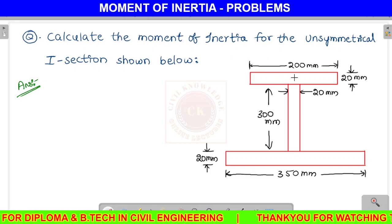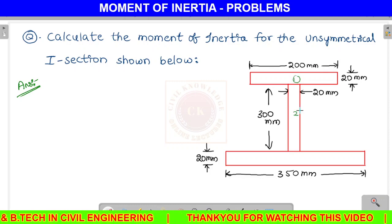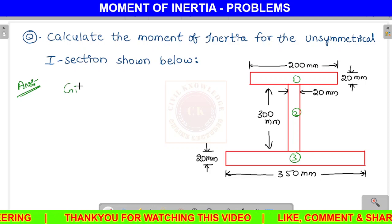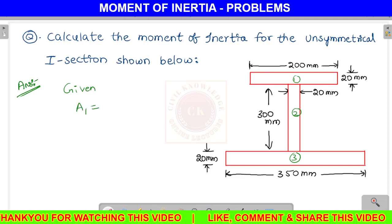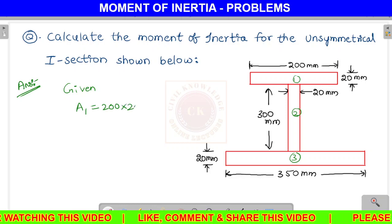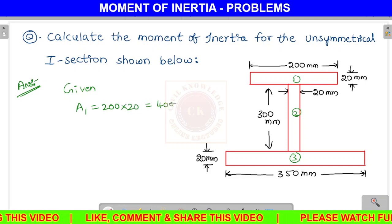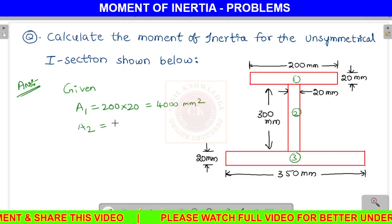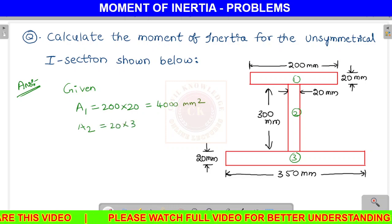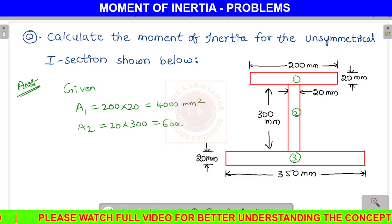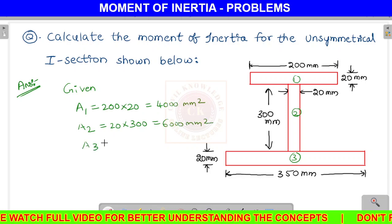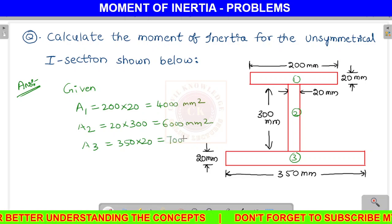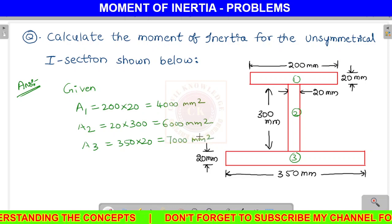We divide the section into three areas. This is the first area, this is the second area, and this is the third area. A1 is 200 × 20 = 4000 mm². A2 is 20 × 300 = 6000 mm². A3 is 350 × 20 = 7000 mm².